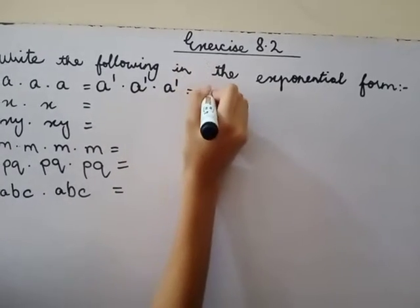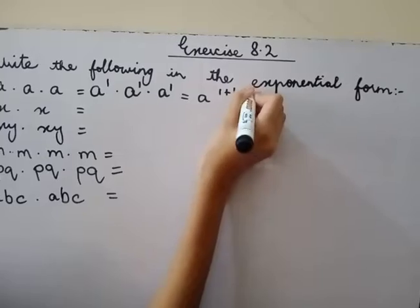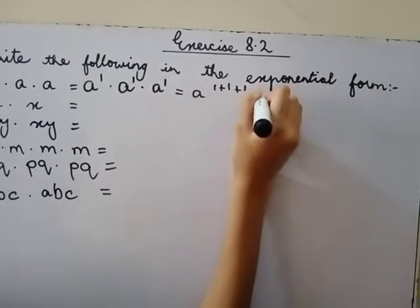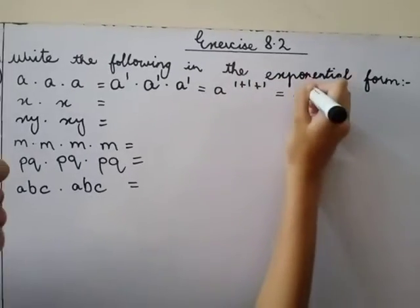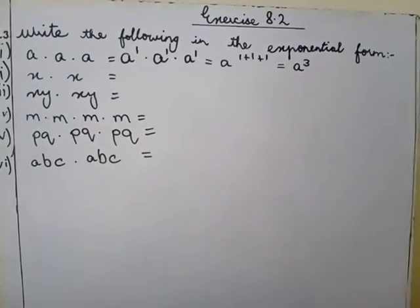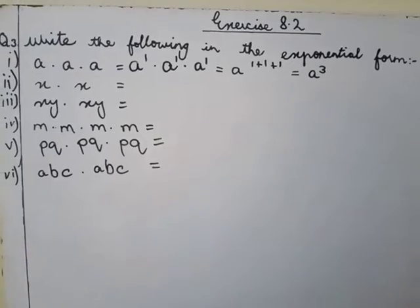So it equals to a one plus one plus one. So it equals to a one plus one is two, two plus one is three. So this is exponential form.